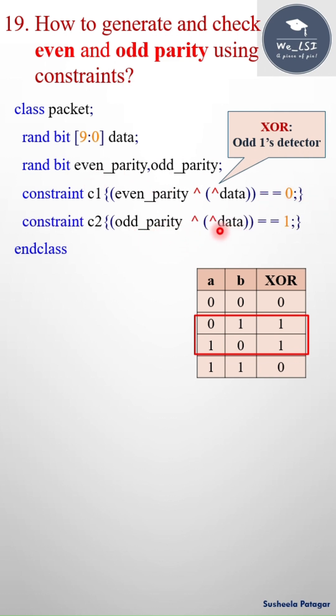Similarly for odd parity, if the data has odd number of ones, I have to keep it odd because odd parity ensures that the total number of ones in the given data, including the parity bit, is odd. To keep it odd, I have to add zero. Zero XOR one gives one, that's why the condition is like this.